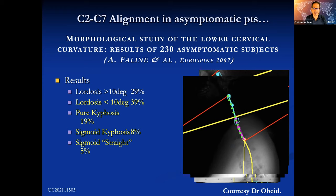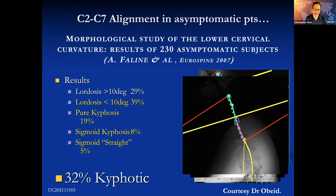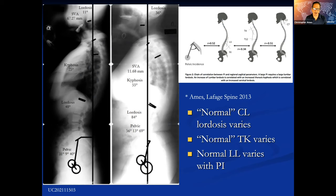When I was a fellow with Volker Sontag at the BNI, whenever there was any sort of cervical kyphosis, we always looked at that as abnormal and pathologic. But when you take a deep dive into the normative data, you find that actually 32% of spines are kyphotic at baseline. So simply saying kyphosis itself should be treated in a symptomatic patient — that's not sophisticated enough to really understand the problem.